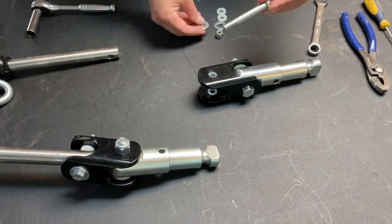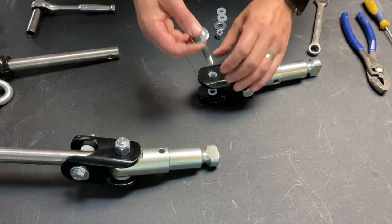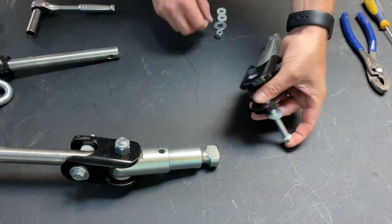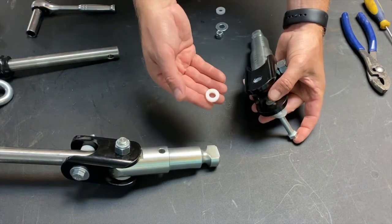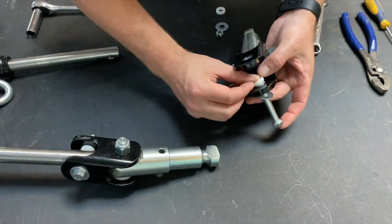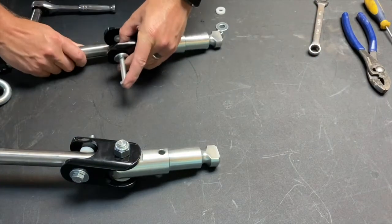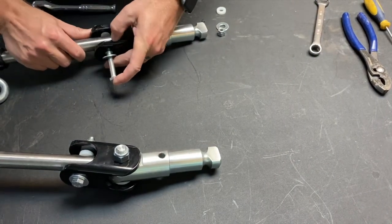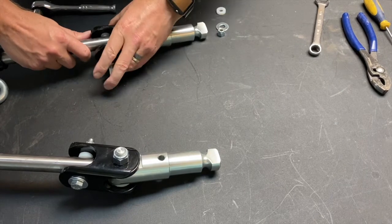Next take the 3/8 steel washer and slip it over the 3/8 bolt and feed it through the clevis far enough to get the 3/8 poly washer on. You will then slip it over the bar end and push the bolt through, but not all the way through.